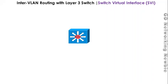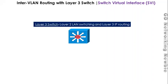Hi everyone, we are going to discuss inter-VLAN routing with the layer 3 switch today, and we also discuss the switch virtual interface or SVI. A layer 3 switch actually performs two functions: on layer 2 it performs LAN switching, and on layer 3, in addition to that LAN switching, it also performs IP routing for us.